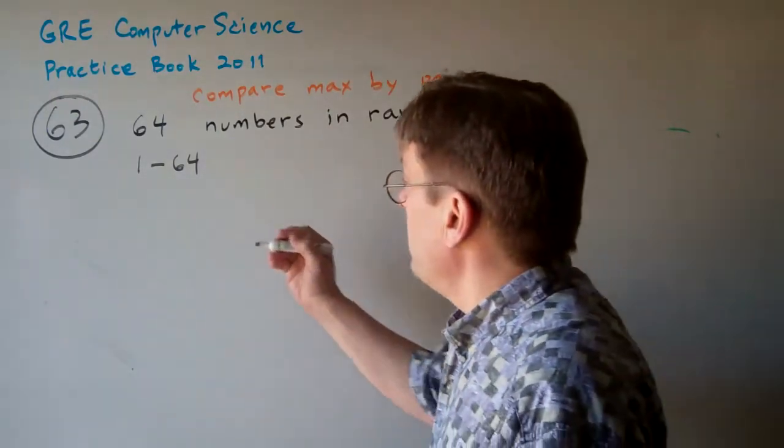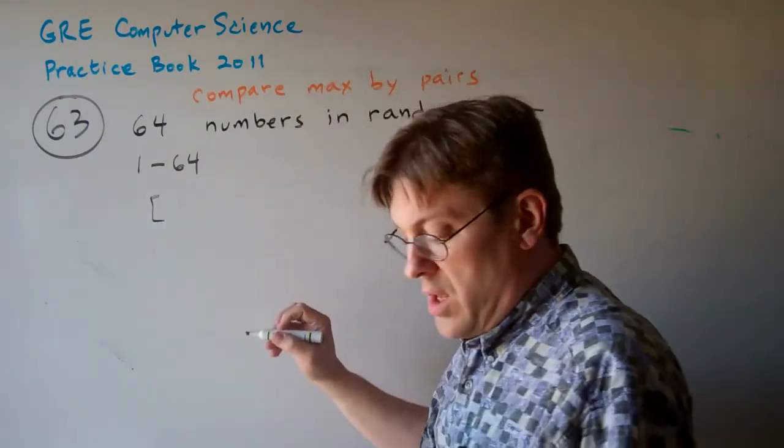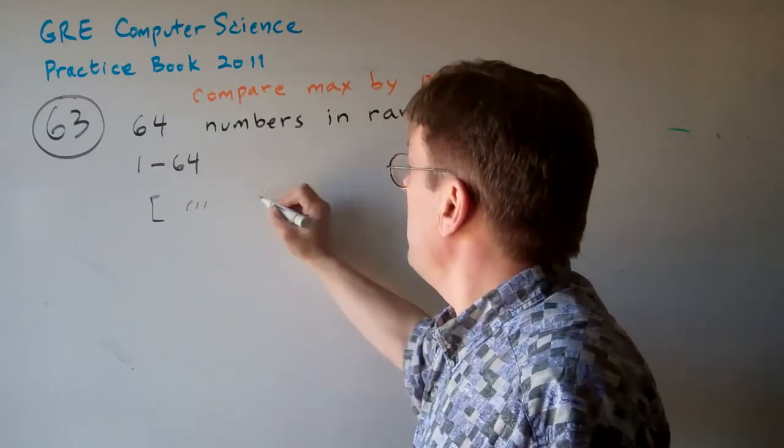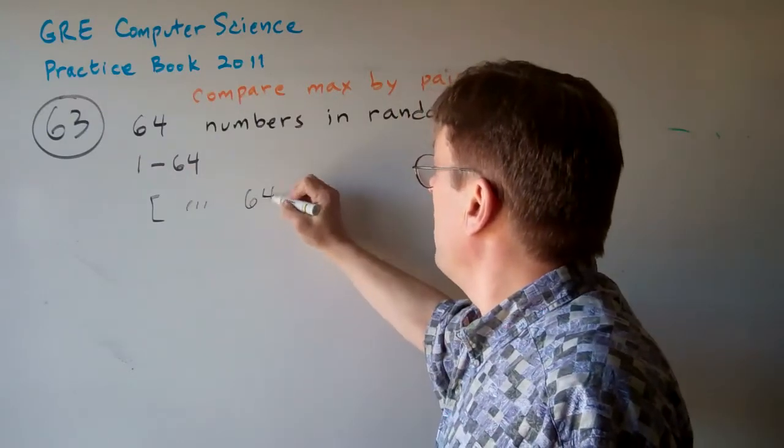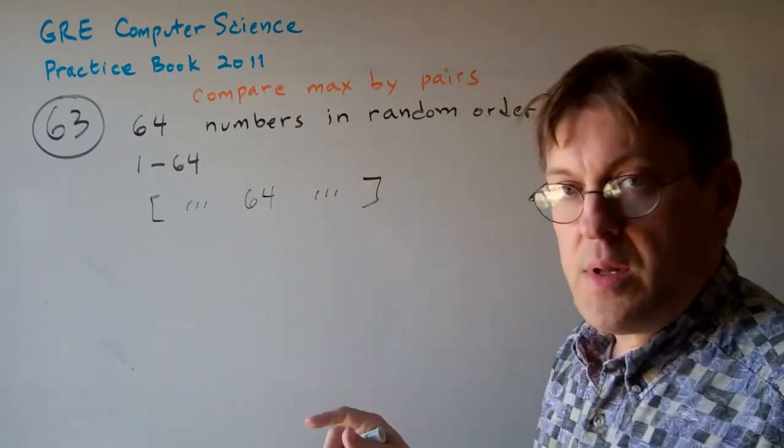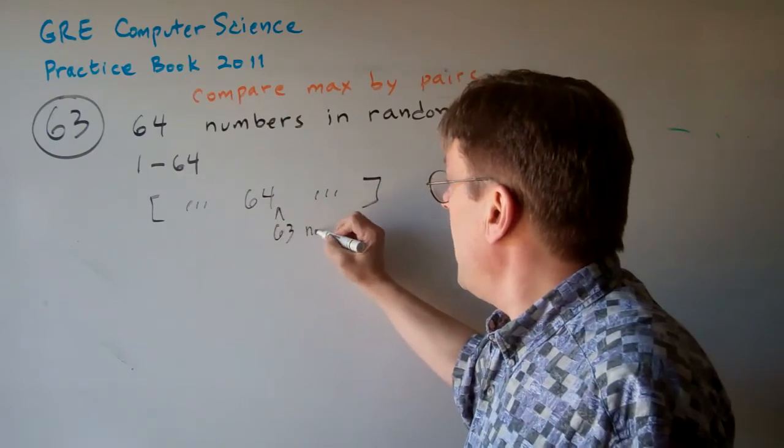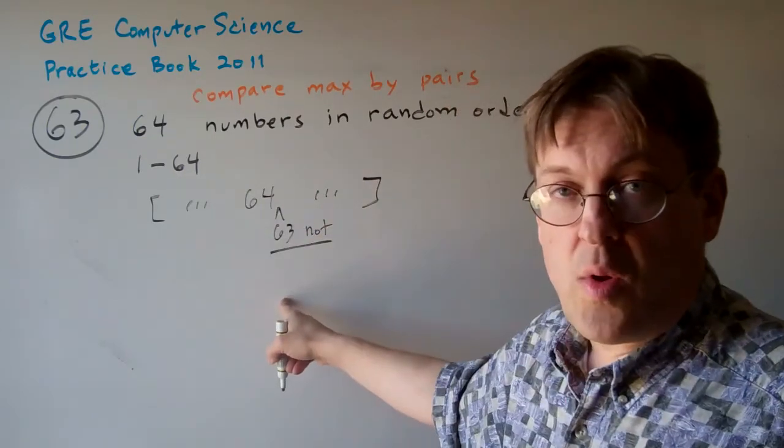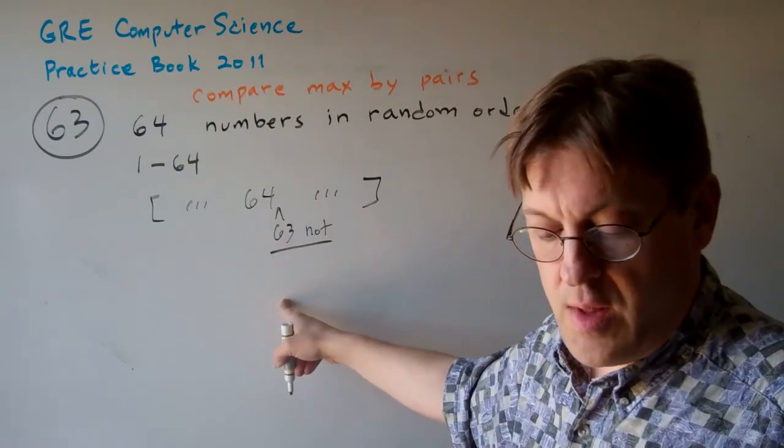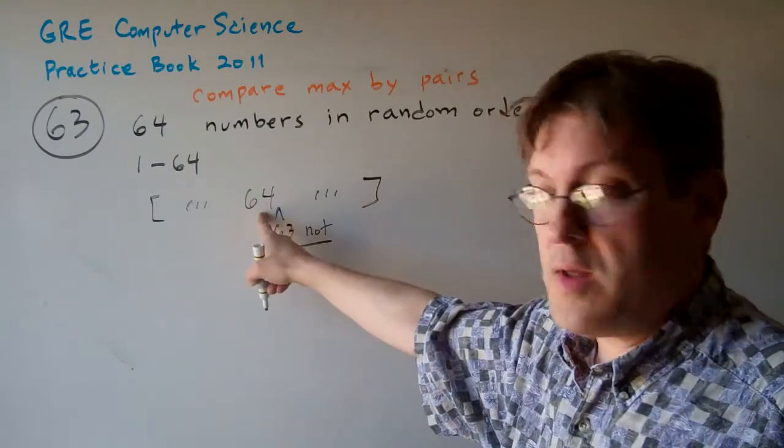Well, what is that probability? First of all, we have some sequence here and we have 64 and we have some other sequence. We need the probability that 63 is not next to 64. What's the probability that 63 is not next to 64? Well, wherever 64 is...